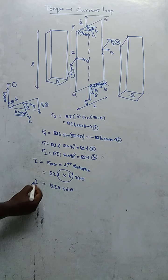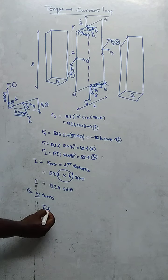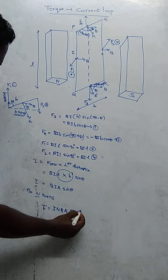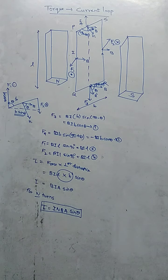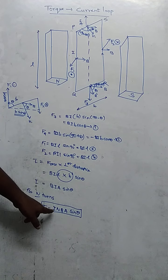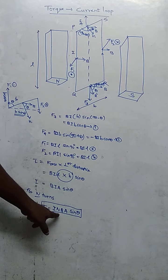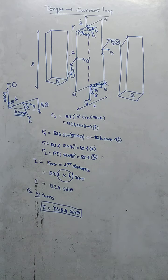So τ = force × perpendicular distance = BIL × B sin θ. Since length times breadth equals area, this becomes τ = BIA sin θ. This is for only one turn. For N turns, the torque can be written as τ = INBA sin θ. Don't forget this formula.